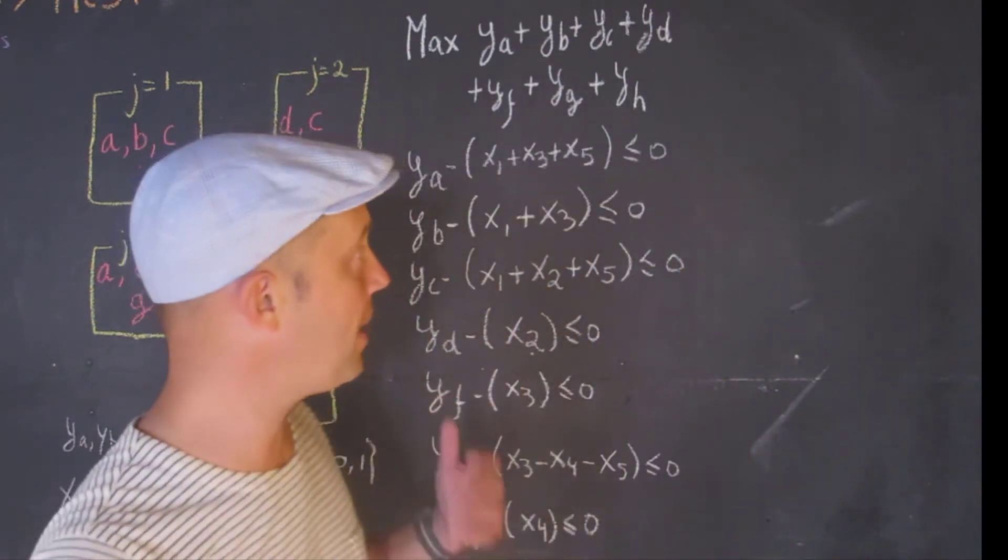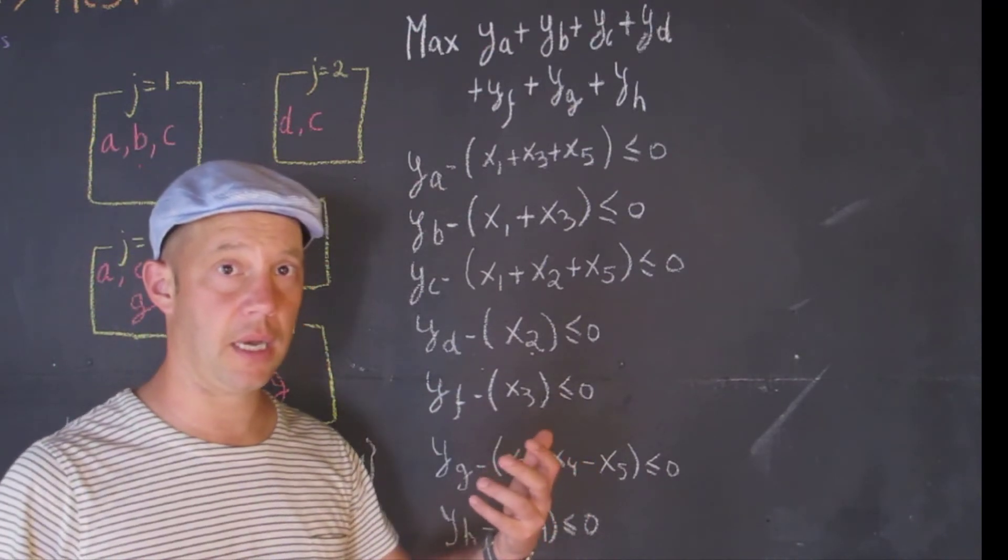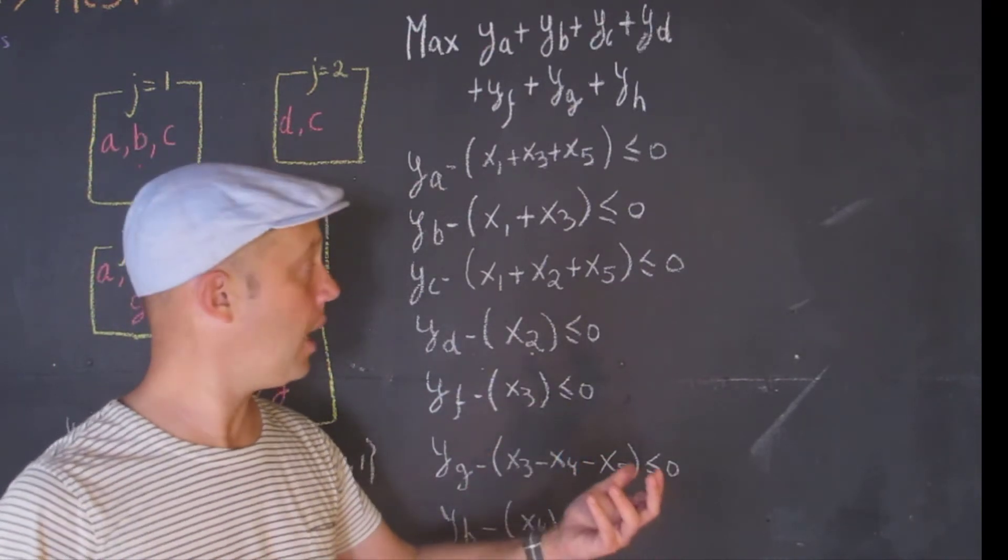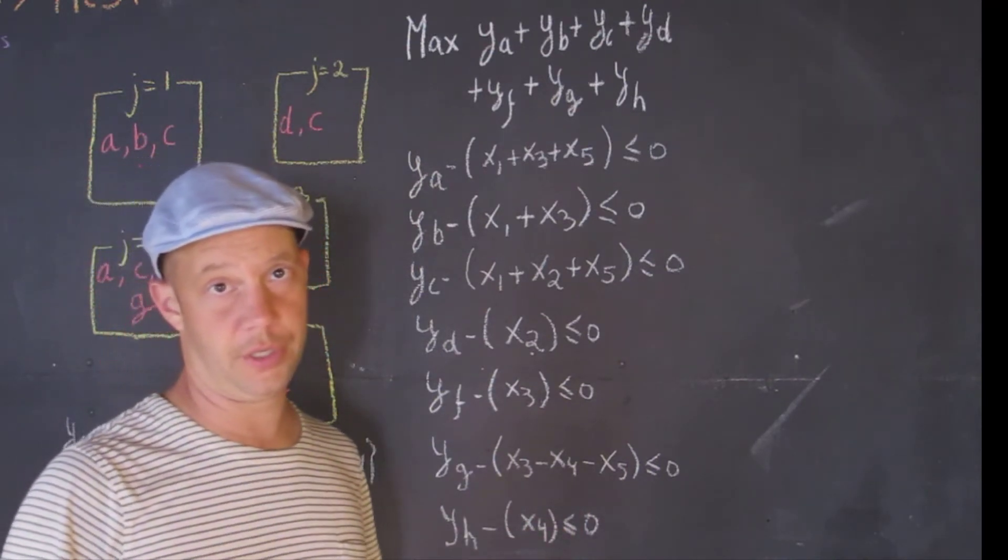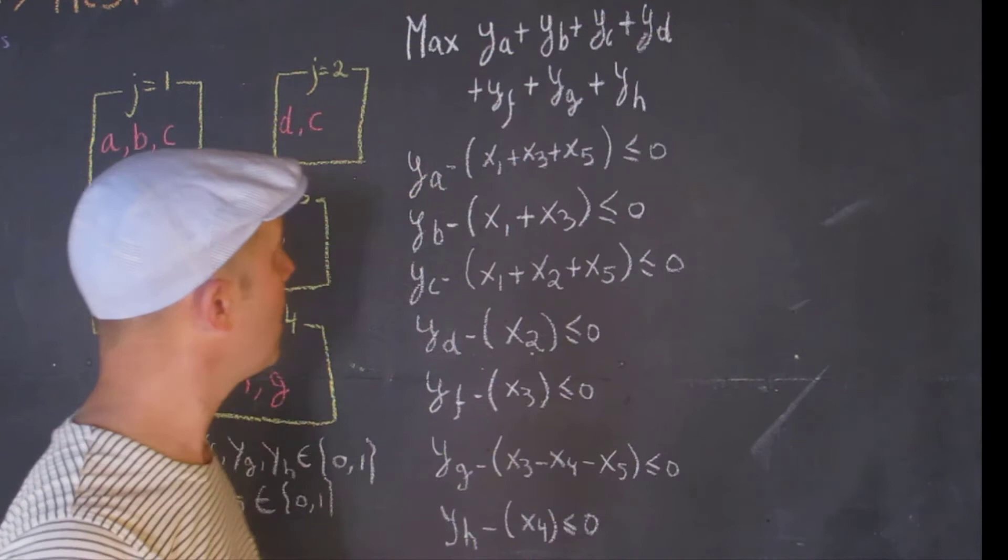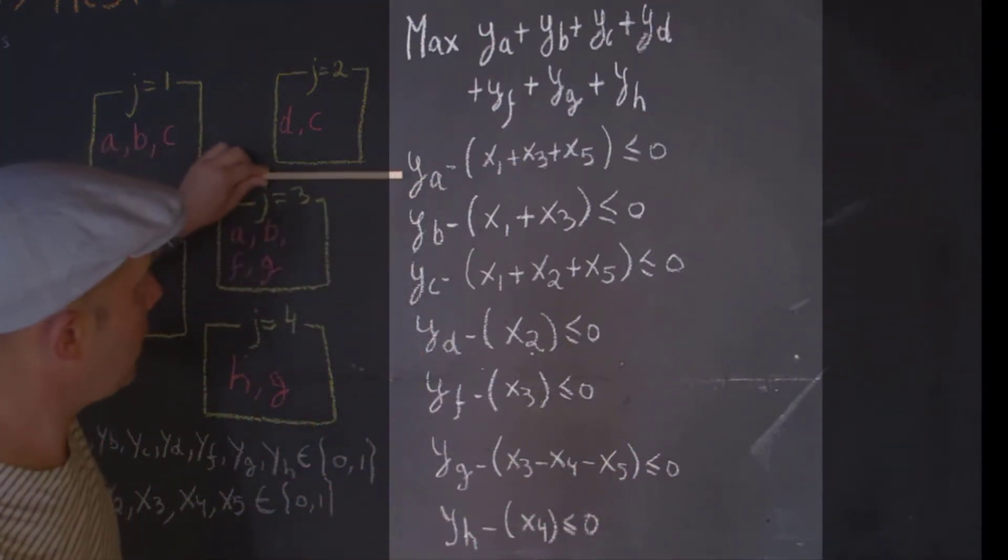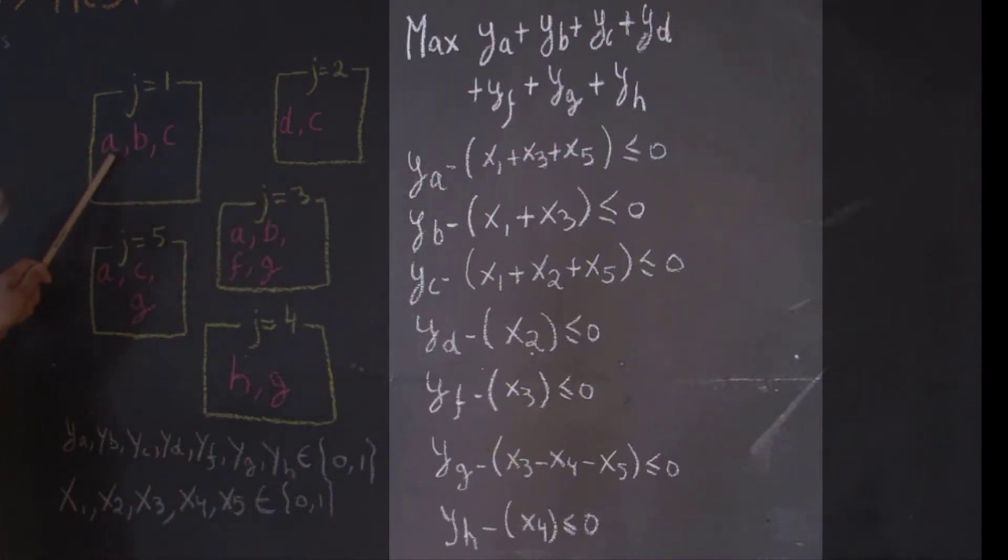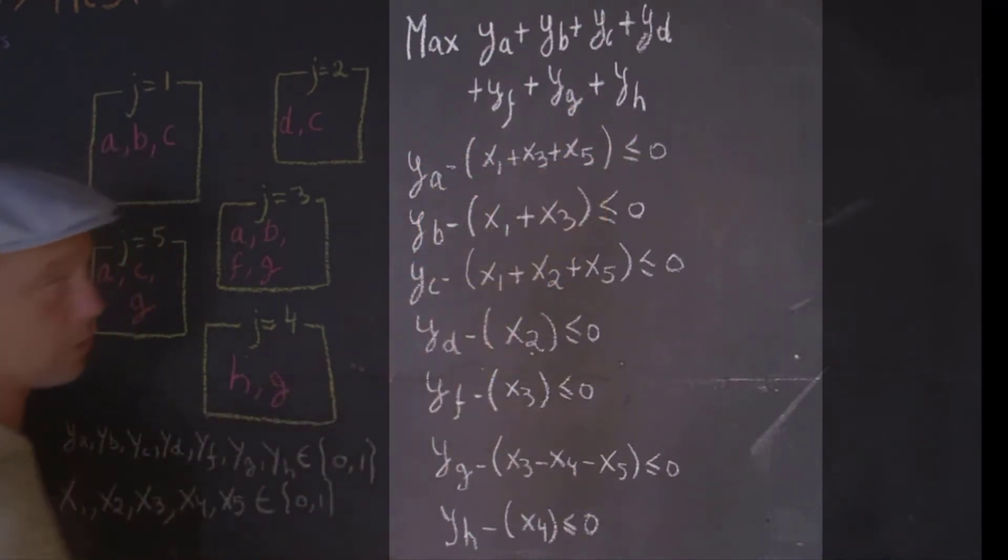So then the question is, we would like to try to maximize the number of species that can be set aside. But of course, trying to keep the number of facilities to a certain limit. Those facilities, of course, are parcels. So our first constraint is the following. So we're going to look at this species A. Now, species A appears in J equals one, appears in three, and appears in five.